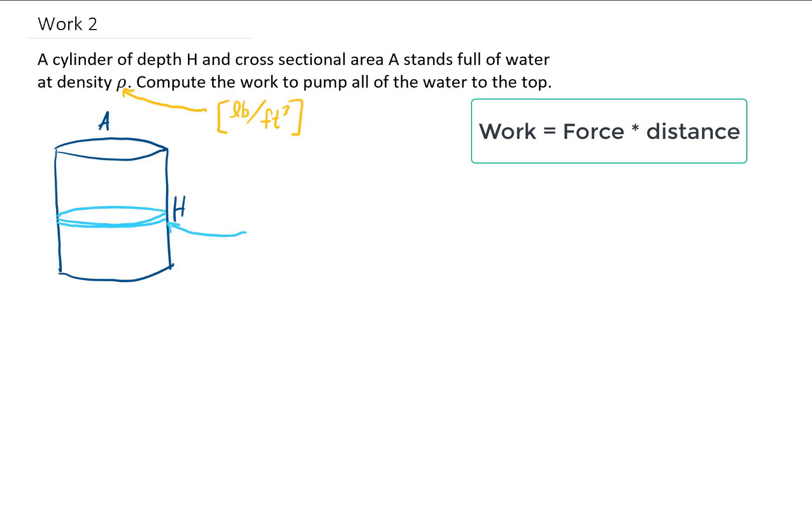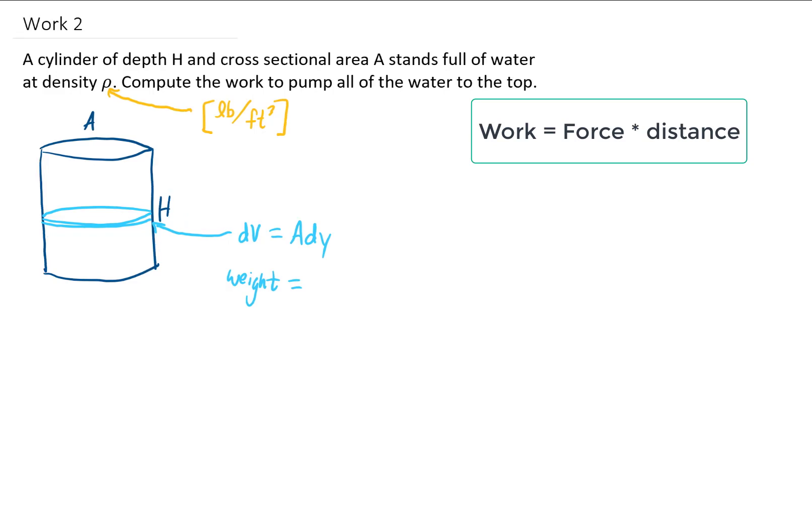And the volume of this little section right here is just going to be the cross-sectional area, which is A, times the width of that, which we're just going to say is some infinitesimally small amount, dy. Now if that's the volume of that little slice, then the weight of that little slice is going to be rho times A times dy.